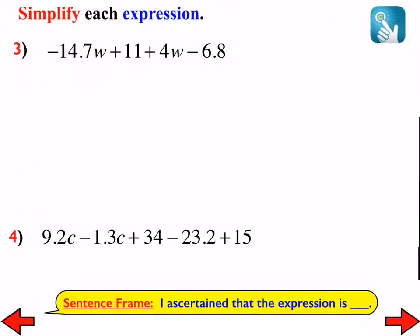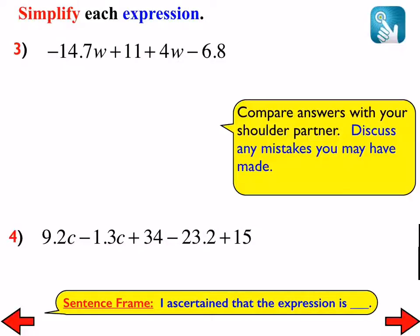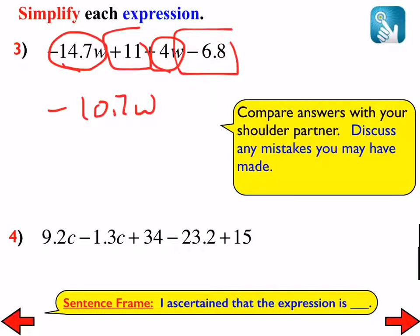Number 3. What'd you get? I ascertain that the expression is negative 10.7w plus 4.2. Very good. And once again, what we're doing here is we're just combining like terms. Negative 14.7w and 4w, that makes negative 10.7w. And then the positive 11 and negative 6.8, that gives us a positive 4.2 there.